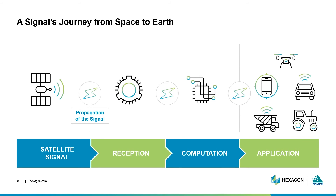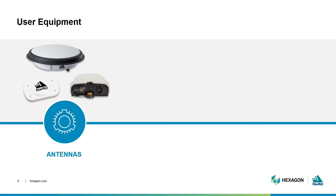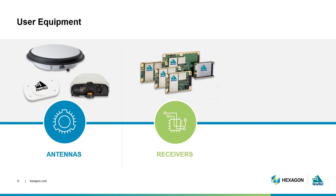This webinar series will further expand on each of these stages, including the factors weakening or degrading signals, the equations used to supplement degraded signals, and more. But before we get too complicated, the underlying principle of speed equals distance over time remains the same. GNSS infrastructure and user equipment build upon this basic equation. At its most basic level, user equipment includes antennas to better receive signals and receivers to better calculate your position.